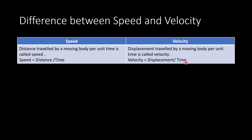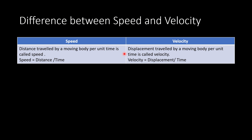Speed is a scalar quantity and velocity is a vector quantity. What do we mean by scalar quantity and vector quantity? Scalar quantity is that physical quantity which has only magnitude but no direction. Vector quantity is that physical quantity which has both magnitude as well as direction.